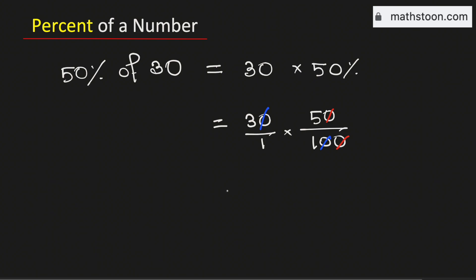Therefore, it will be equal to 3 times 5, which is 15, divided by 1 times 1, which is 1. And this division is the same as 15. Therefore, 50% of 30 is equal to 15, and this is our final answer.